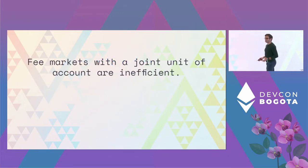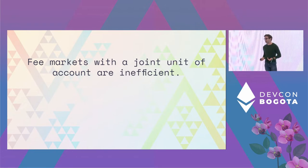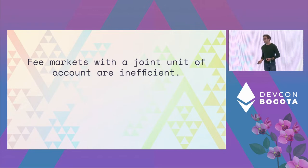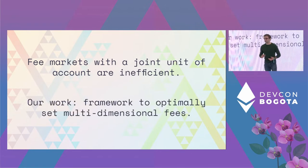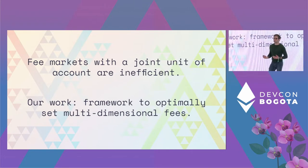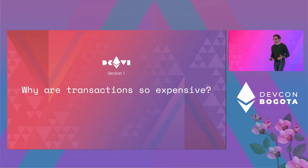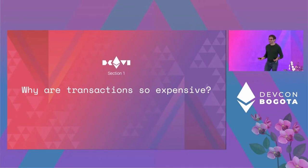The first thing I hope to convince you of is that fee markets with a joint unit of account, like gas, are actually pretty inefficient. What we're going to slowly work towards in this talk is a framework to optimally set multidimensional fees. The first part is: why are transactions so expensive? Why is having one market not necessarily something that you want to do?